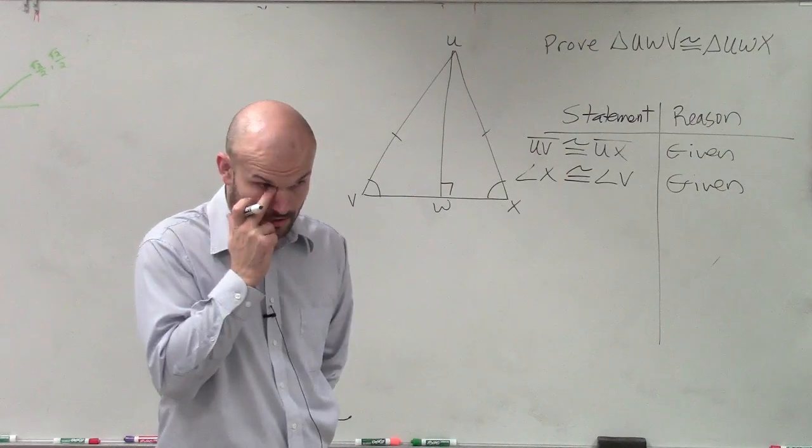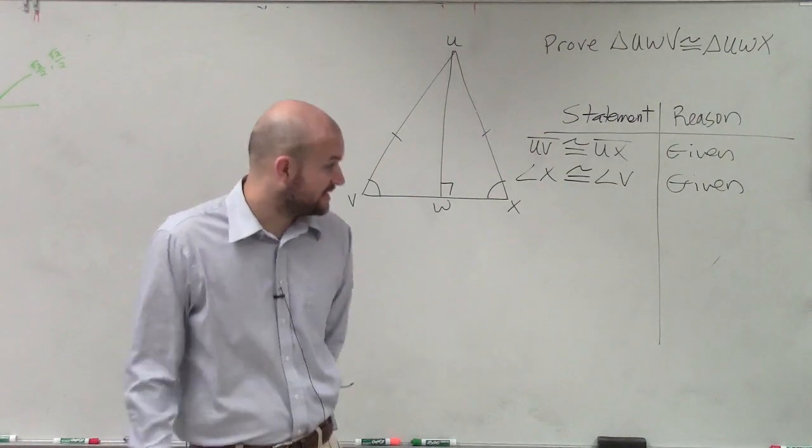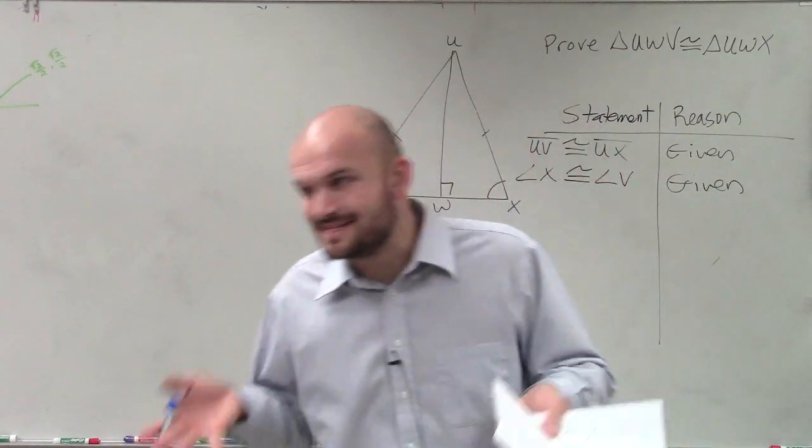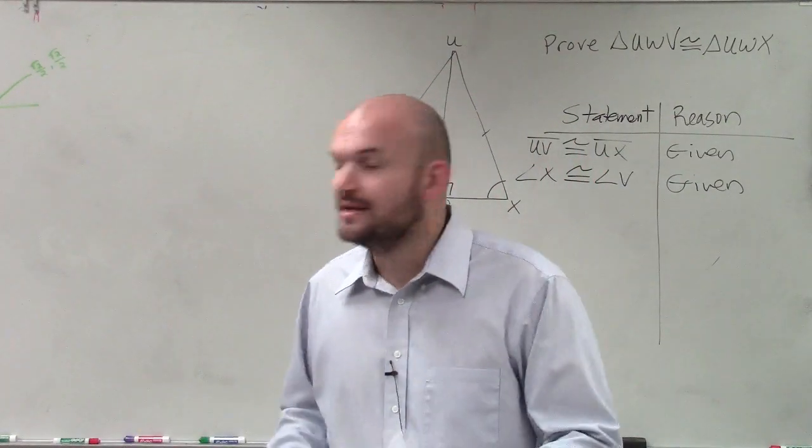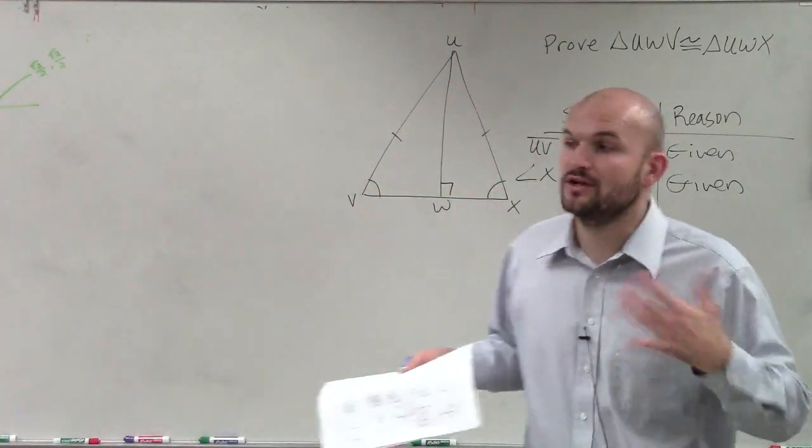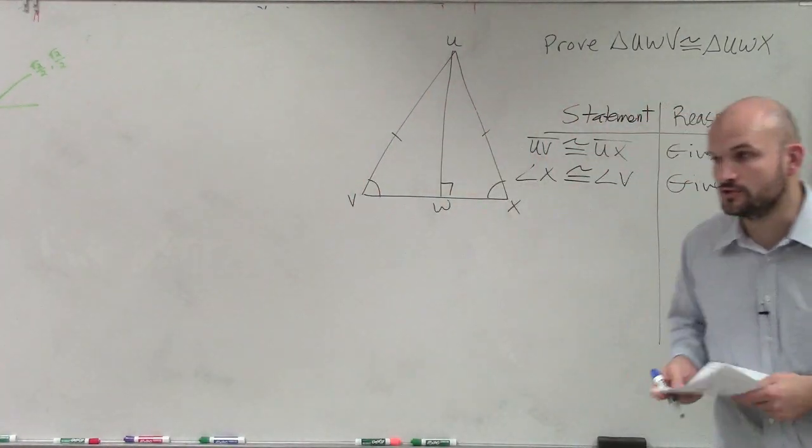Alright, so the next thing is now we're going to have to do a little thinking. So the easy stuff is out of the way. The stuff that has been given to us is now out of the way and it's been written down. Now what we need to do is apply what has been given to us and be able to see what else can we find that is congruent between those two triangles.